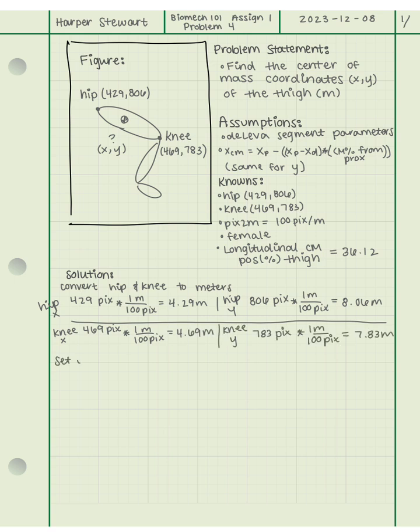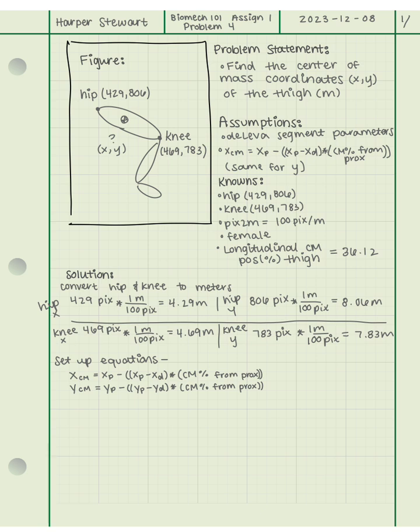Now for the fun part — we're ready to set up our equation, which we pulled from our equation sheet. The x center of mass position equals the x coordinate of the proximal end minus the quantity of the proximal end minus the distal end, times the center of mass percentage from the proximal, which we pulled from the de Leva table. We need to be very careful about our parentheses in this equation, otherwise we can end up with the wrong coordinate information.